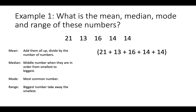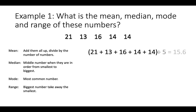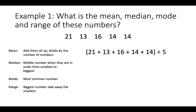So for the mean, we add them all up and divide by the number of numbers. There are five numbers here: 1, 2, 3, 4, 5. When we do that in our calculator we get 15.6.